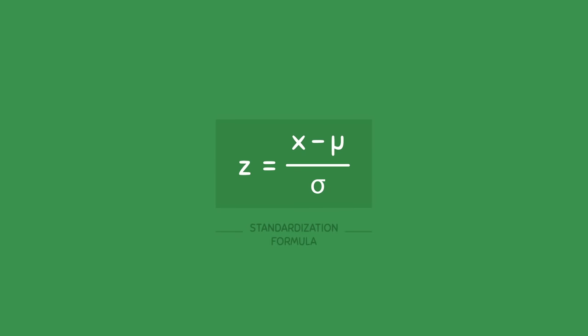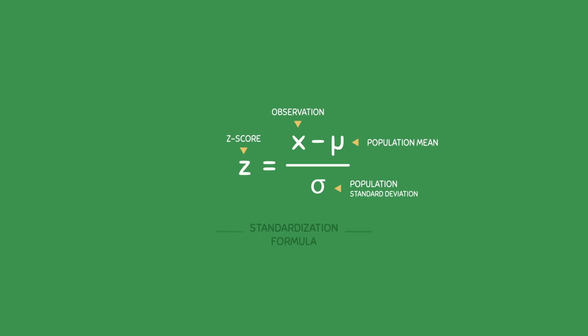Standardization involves using this formula. The formula says that the z-score is equal to an observation x minus the population mean mu, divided by the population standard deviation sigma.